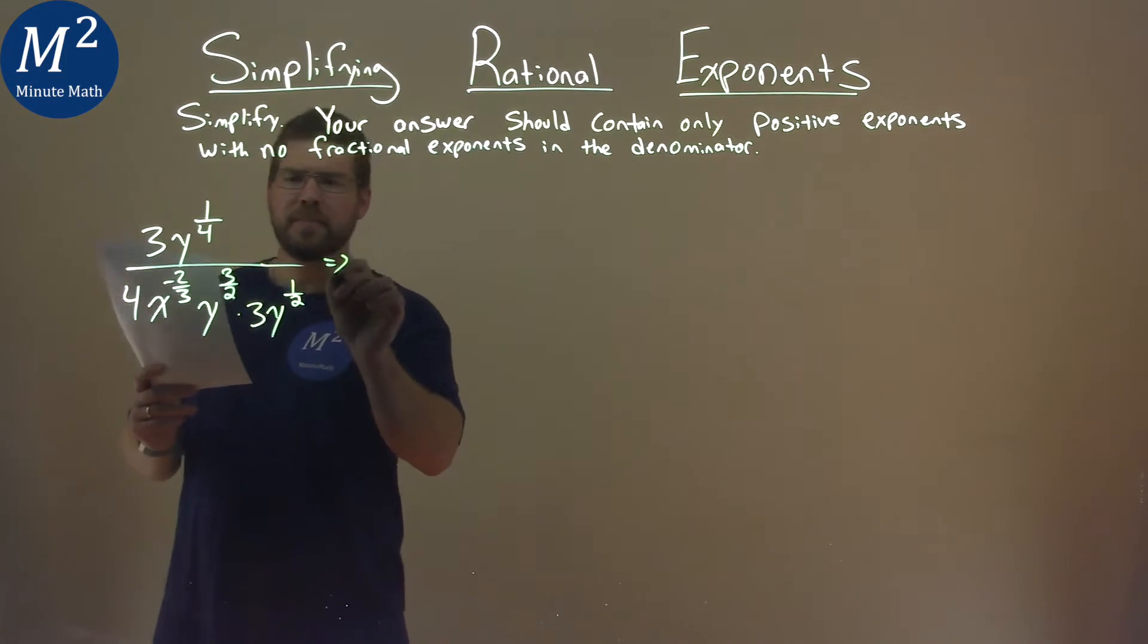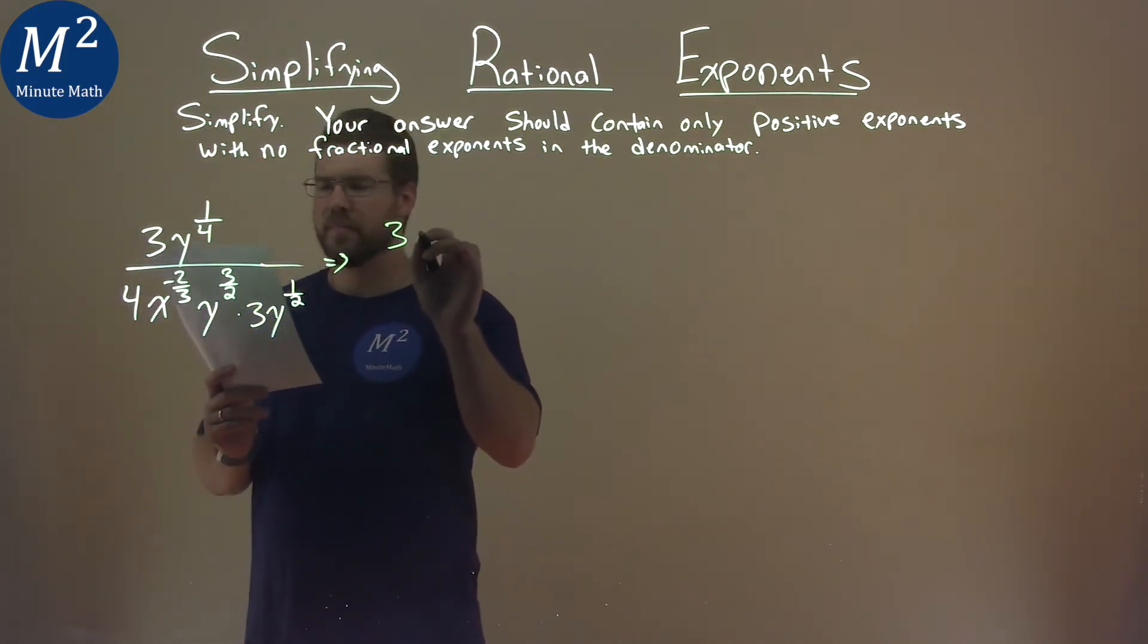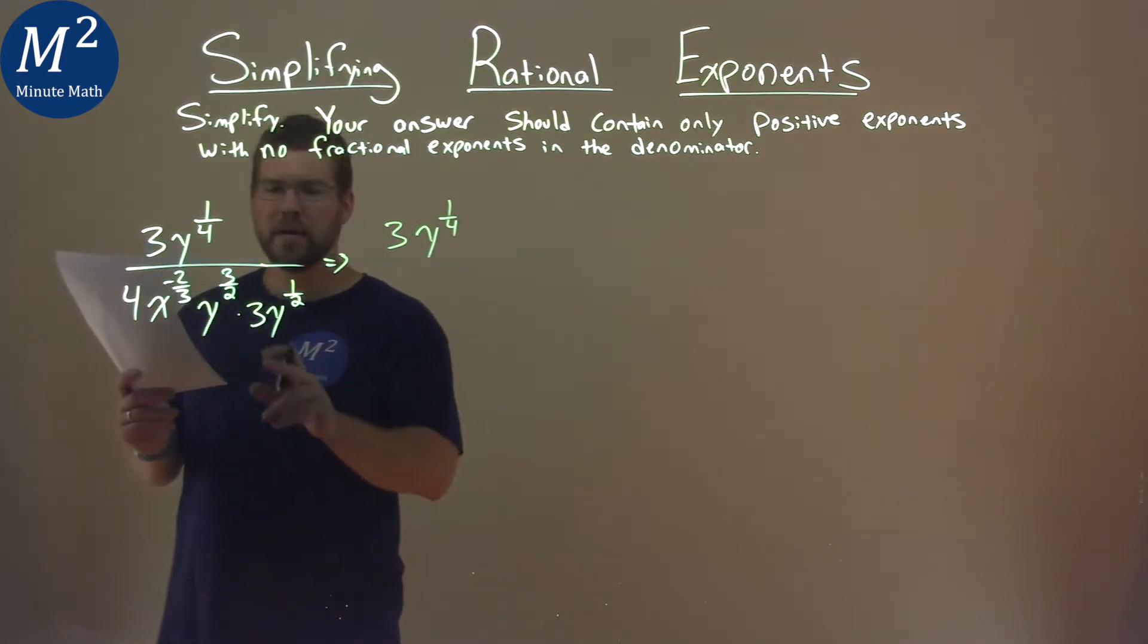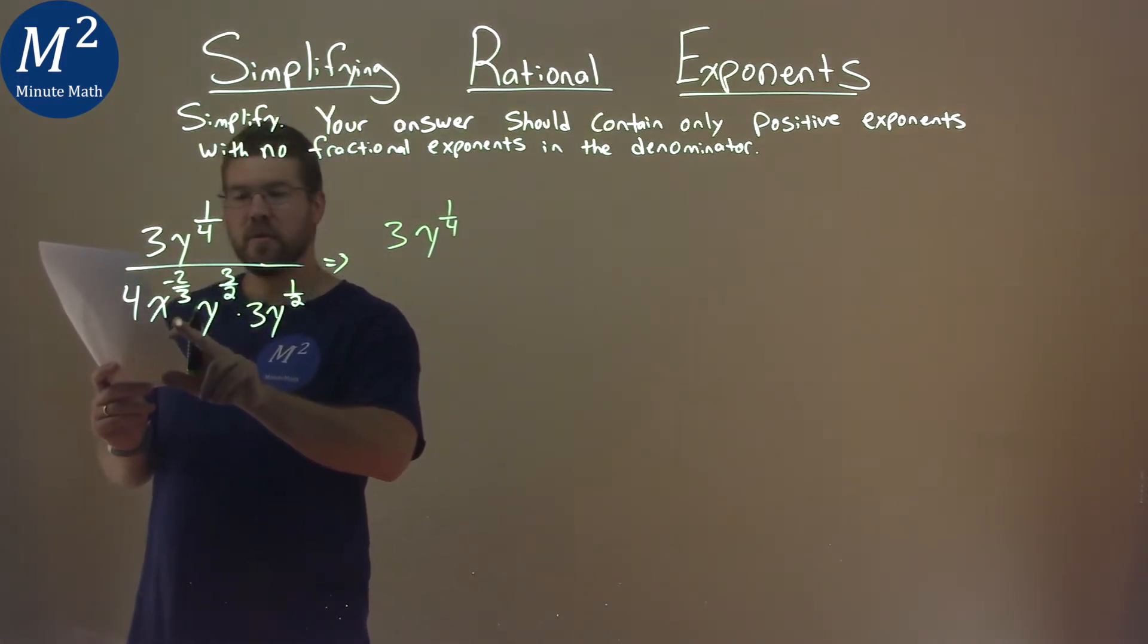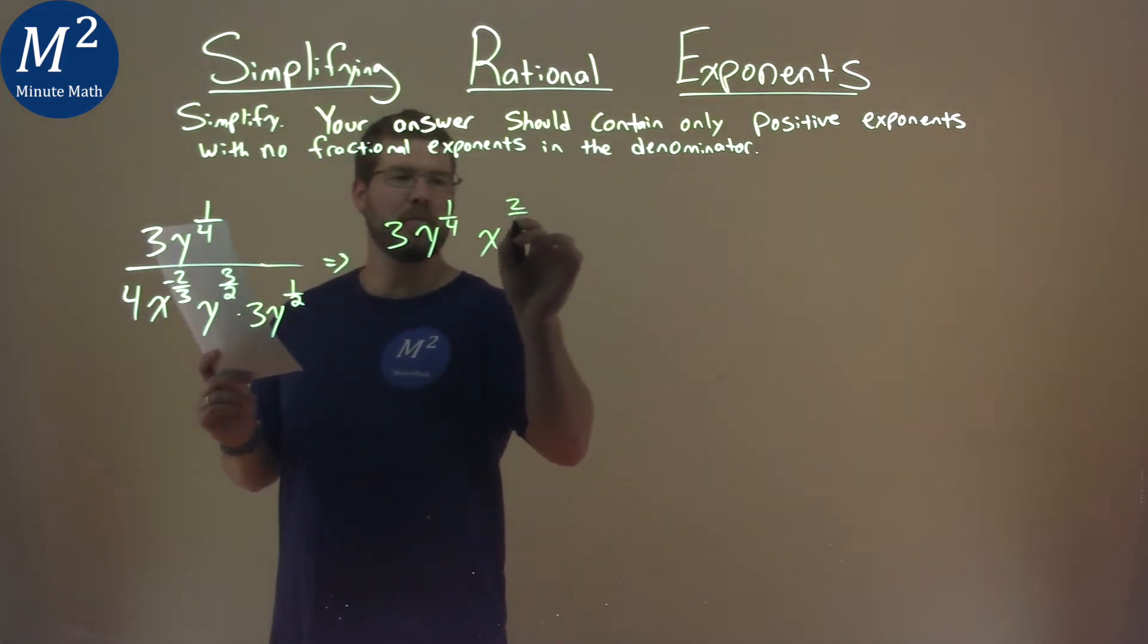This is quite the doozy. So the numerator we're going to keep the same, 3y to the 1/4 power. But what I'm going to do is bring this x to the numerator. Negative 2/3, x to negative 2/3 is the same in the denominator as x to the positive 2/3 in the numerator.